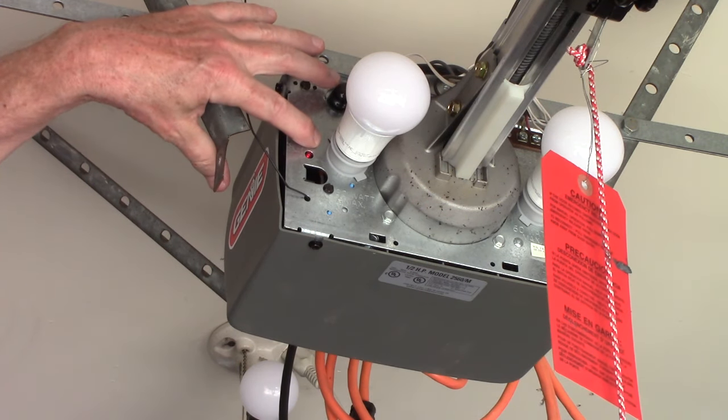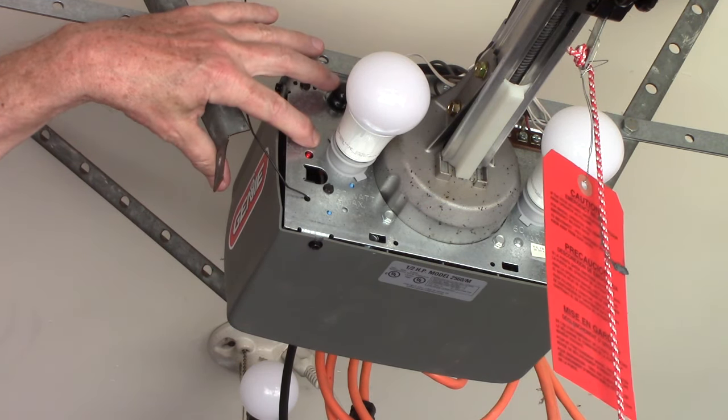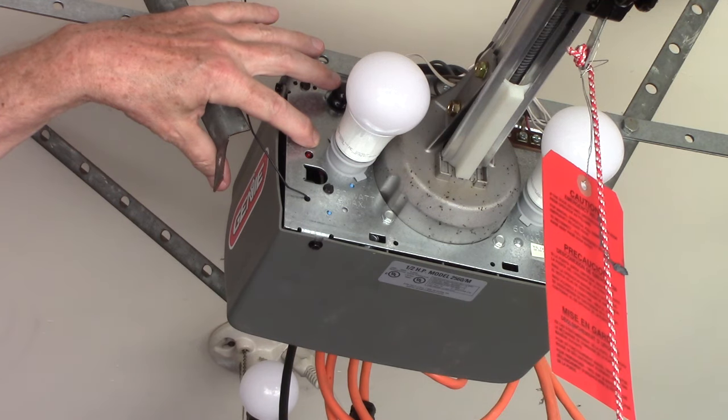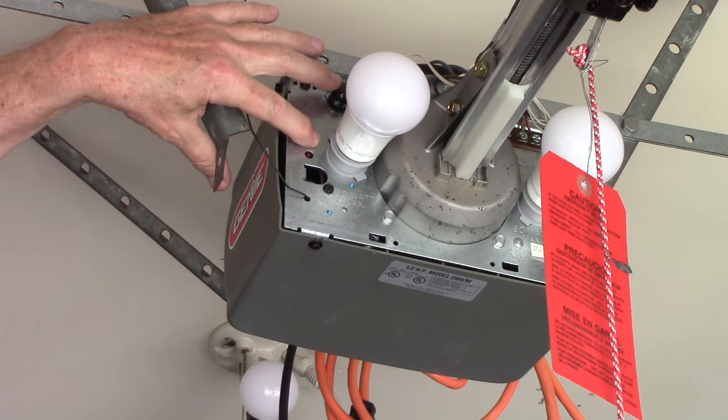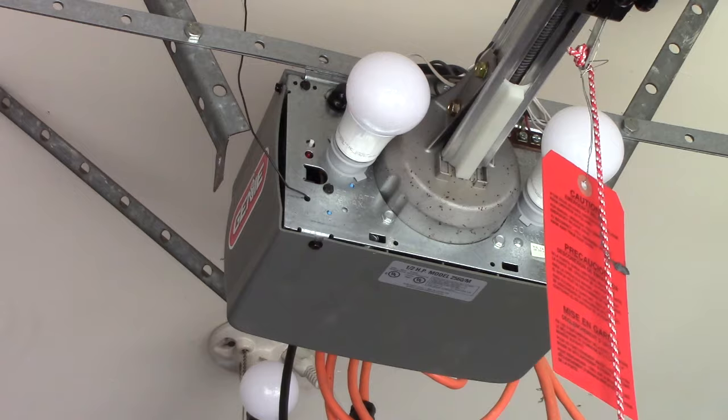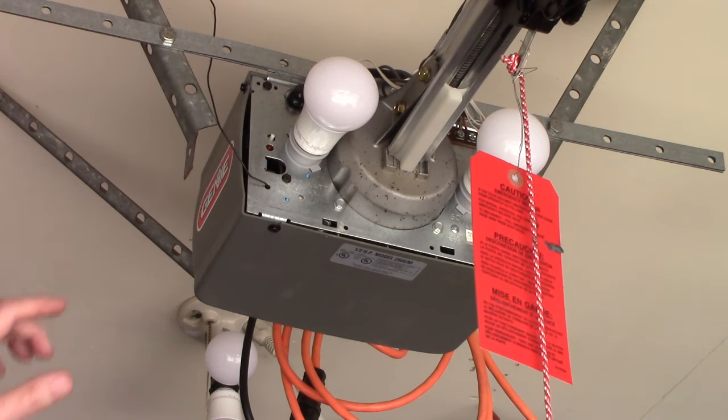You're going to press the button and hold it and wait until the LED stops blinking. Now you've erased all the old codes. To reprogram your remotes,